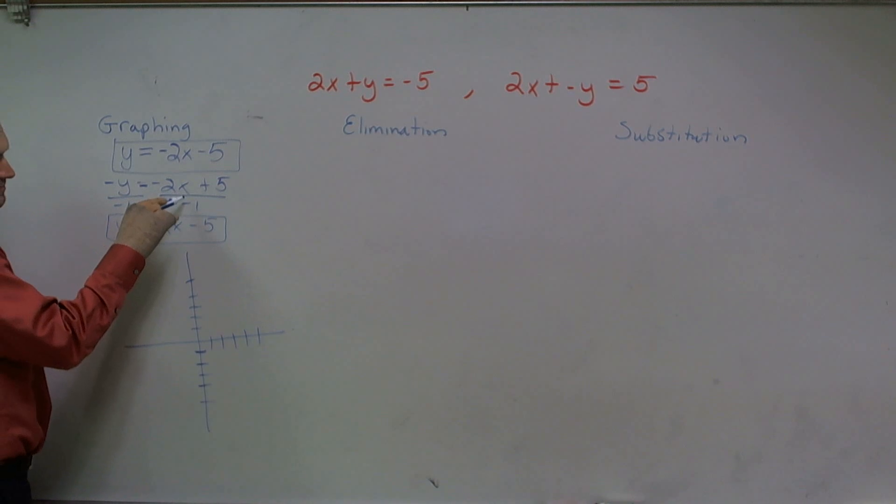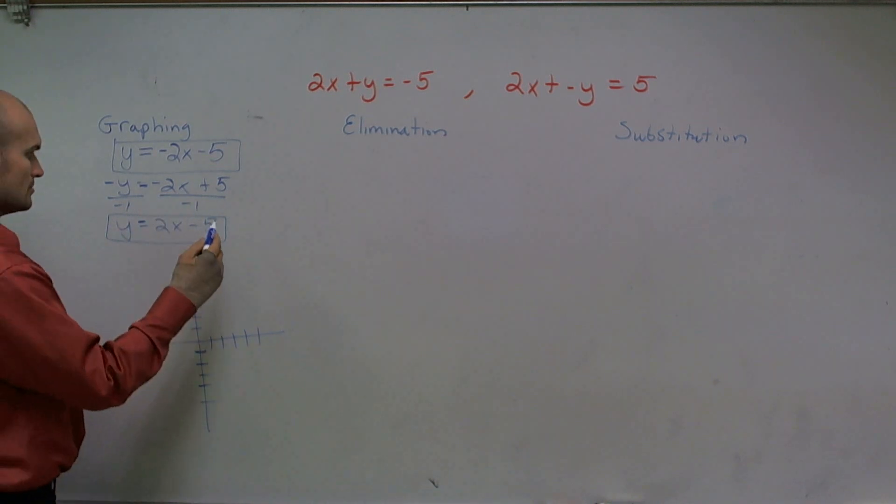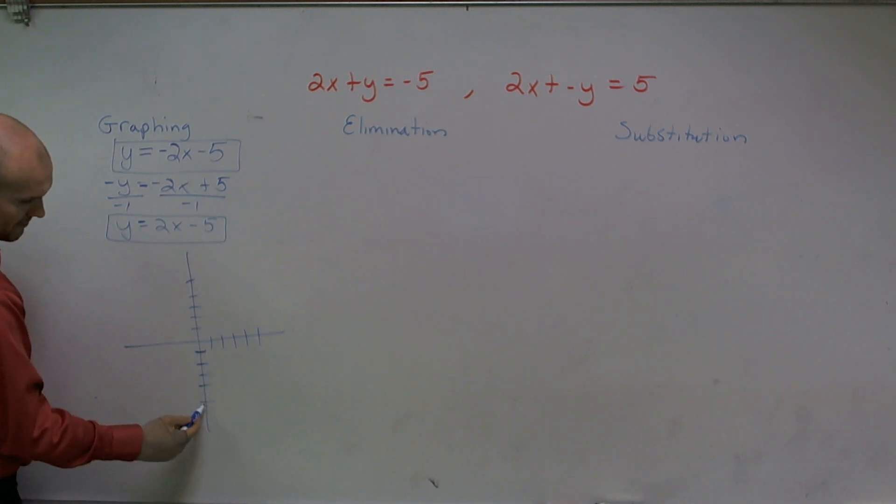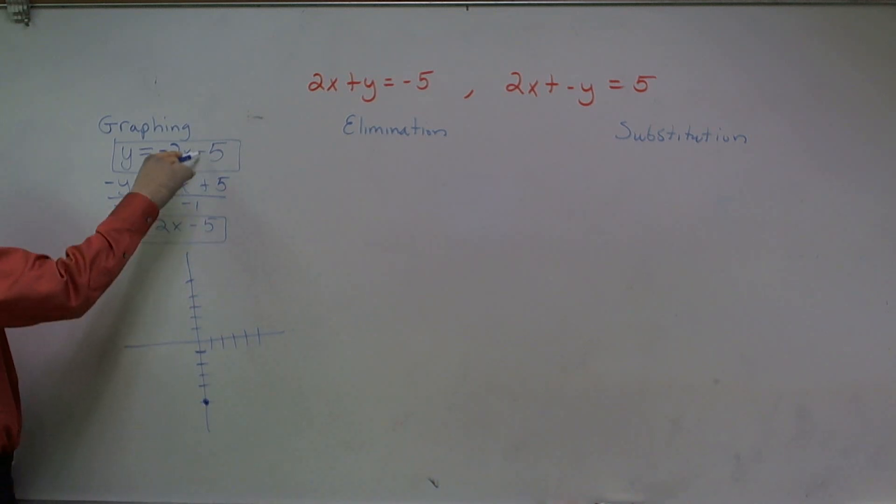My slope here, oh shoot, they both have a negative 5. My bad. I forgot that one's at negative 5 and that one's at negative 5.